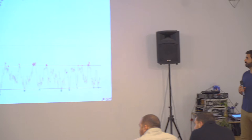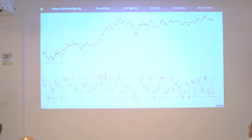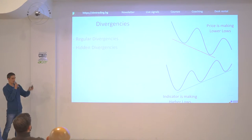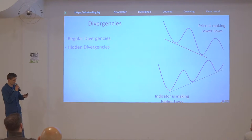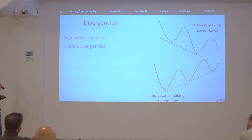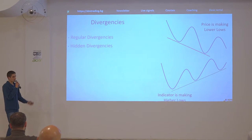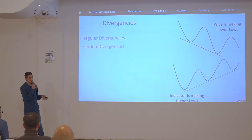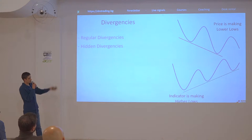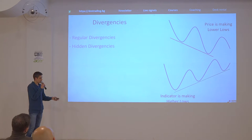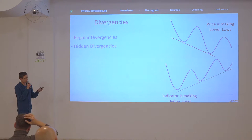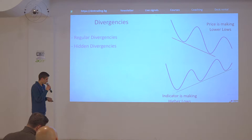Since the time has passed very quickly and we don't want to lose you with all those lines, let's continue with divergences. What are divergences? Basically it's a difference between the chart you're seeing and the indicator. Usually for divergences you can use the MACD indicator - Pascal will tell you about it in a bit - or you can use the RSI. I'll give you an example with the RSI.